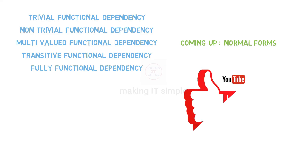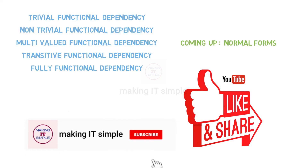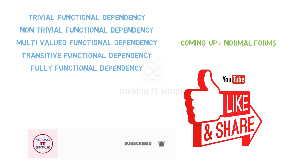So these are the types of Functional Dependencies. Hope you all understood all the types. In the upcoming videos we will cover the remaining normal forms, so stay tuned. If my videos help you in clearing concepts and doubts, leave a like and share the video with others in need. Check out other videos on my channel, and subscribe to Making IT Simple and press the bell icon to get the latest video notifications.